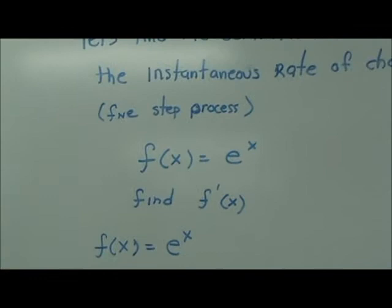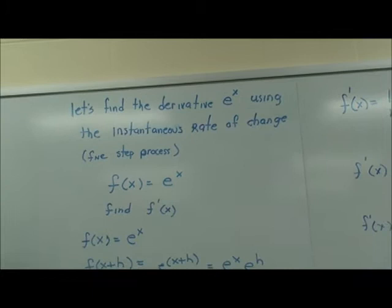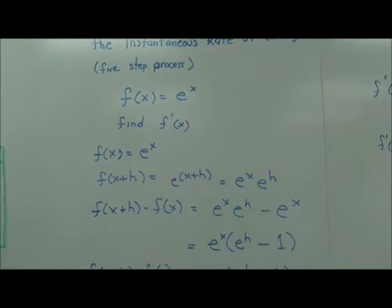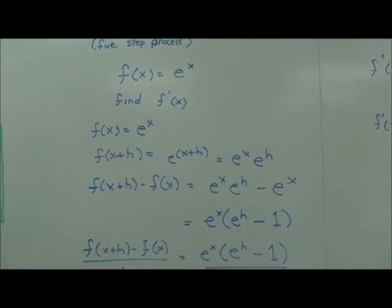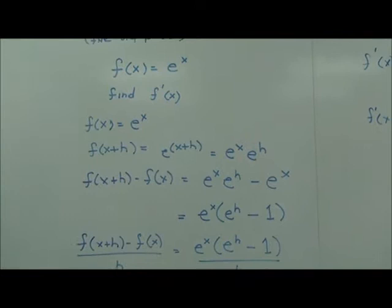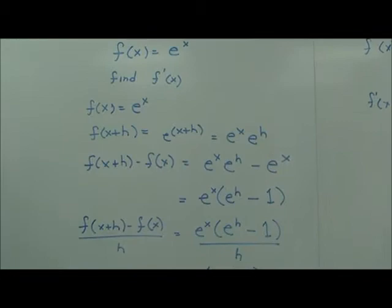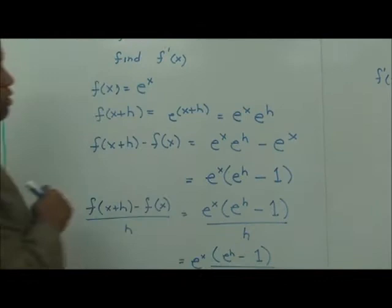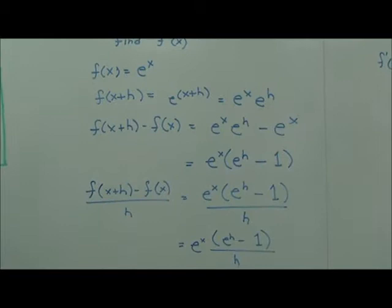We want to find the derivative of e to the x, so we want to find f prime of x. f of x equals e to the x. Step two: f of x plus h equals e to the x plus h, which gives us e to the x times e to the h. Remember, when the bases are the same, we add the exponents — so we're reversing that here. This is e to the x.